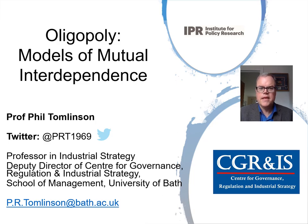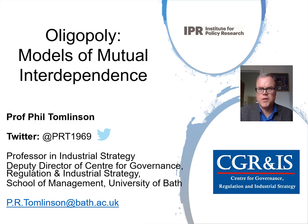Welcome back. In part three we're going to continue with oligopoly, but now we will consider game theory and specifically the prisoner's dilemma model. We'll use this to demonstrate why firms might find it optimal to collude and explain why collusion is ultimately unstable. We'll then consider some of the mechanisms for sustaining collusion.